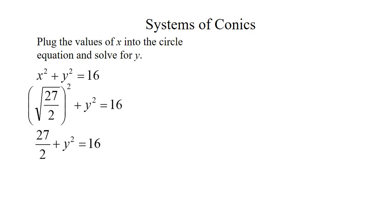And then just isolate y. So I brought the 27/2 to the other side. Then I found a common denominator. So I have 32/2 - 27/2, which gives me 5/2. Now remember that's y², so we have to square root it. And I rationalize the denominator again.